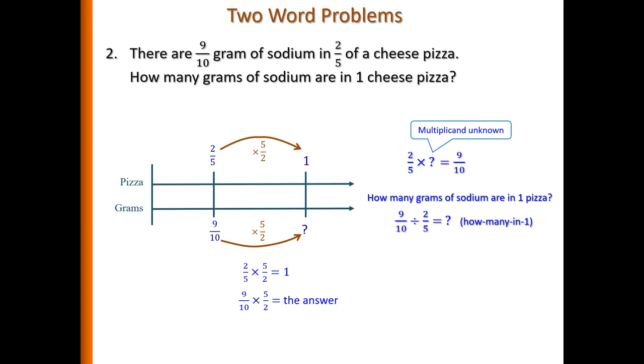So this is how it works. So the inverse multiply strategy means nine-tenths divided by two-fifths. To get the answer is the same as nine-tenths times five over two. And if we simplify, we can cancel the five and the tenths. You will get nine-halves times one-half and they give you nine-quarters.